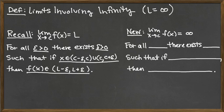Recalling the formal definition of a limit we just learned with c and L both being numbers, we need to take that formal definition and modify it appropriately to handle the case when L is not a number but rather when L is infinity. The L is what's changing — c did not change at all, so really the information about the x's hasn't changed at all.